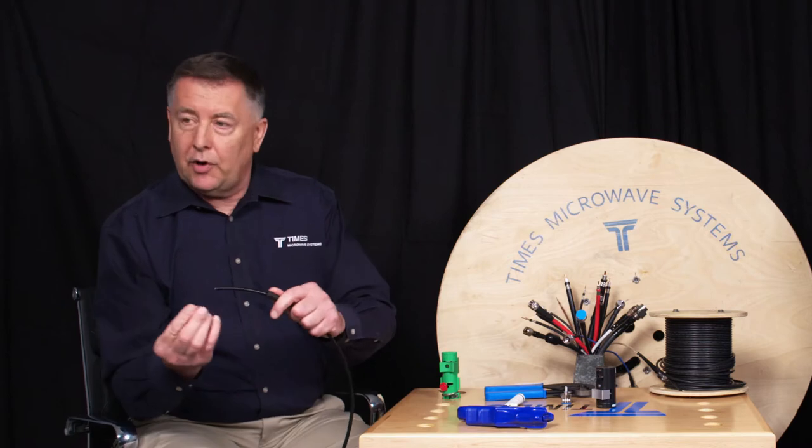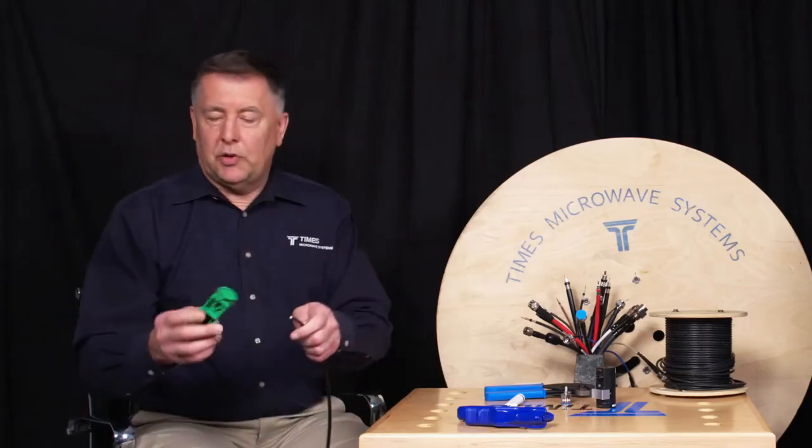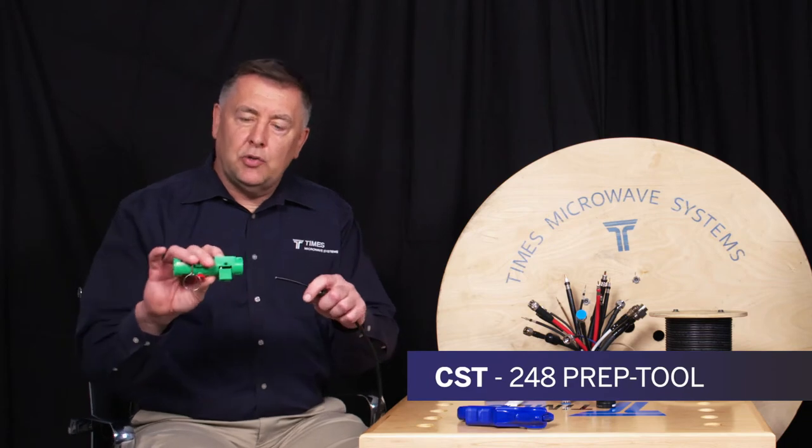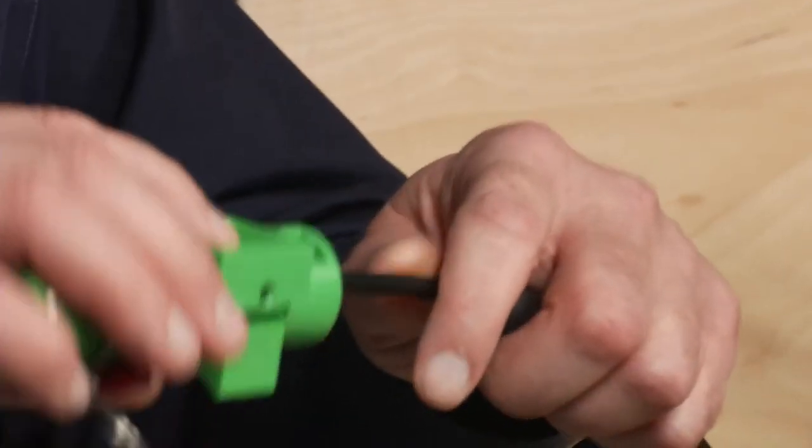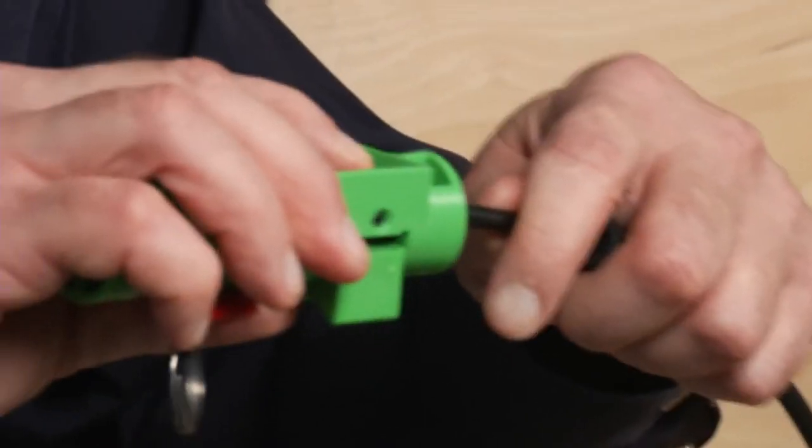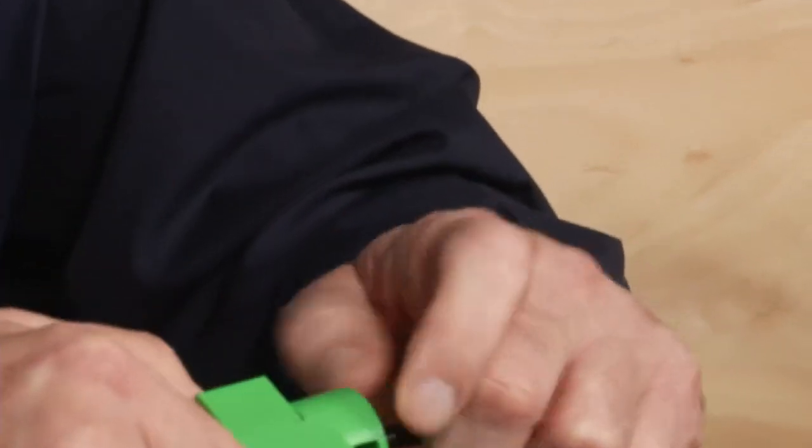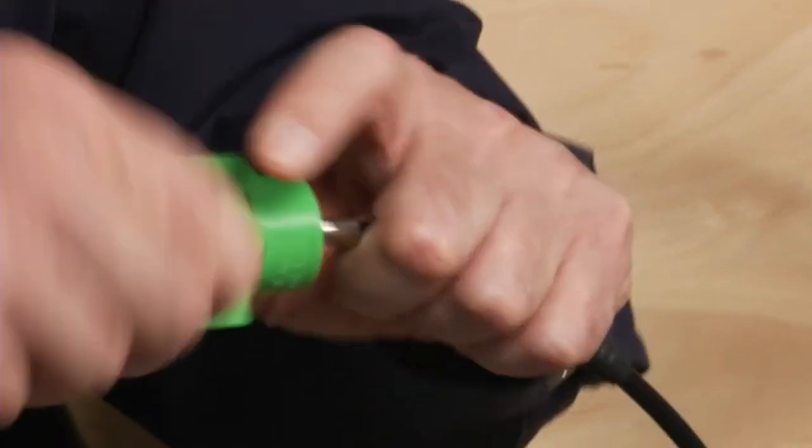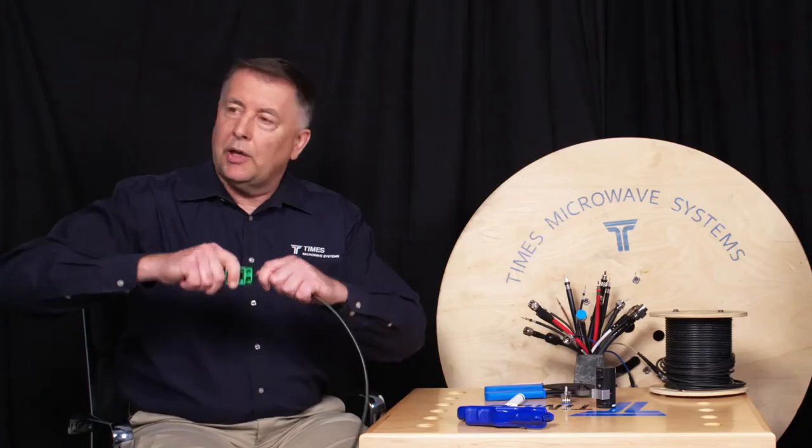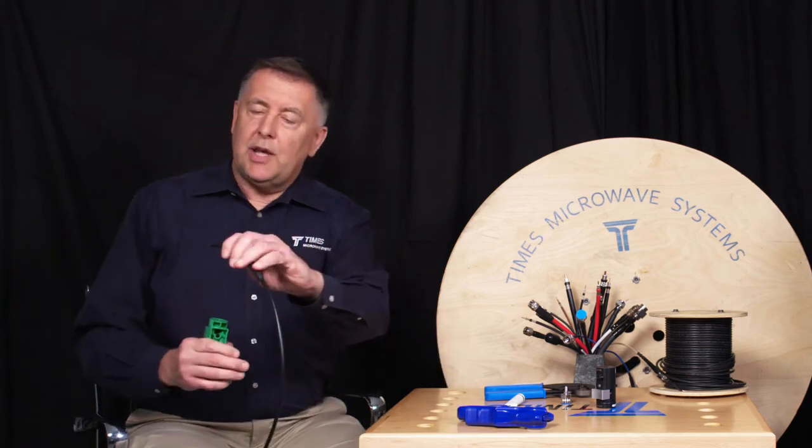Slide the crimp ferrule over the cable. Now we have your prep tool, this is our CST-248 prep tool. We take side one, it's labeled side one and side two. Take side one, pop it into the tool like so. You press down this thumb switch and you spin it around the cable. Once that thing bottoms out, just make one extra spin, leave it depressed, and pull it.